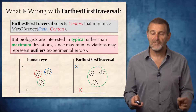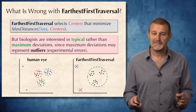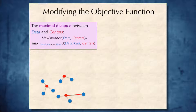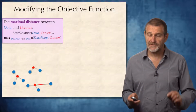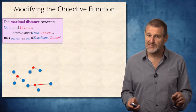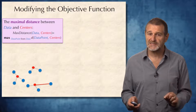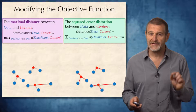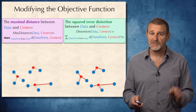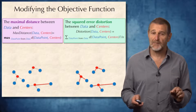We therefore need to develop a different approach to clustering that works well with outliers. To come up with a new clustering approach, we first need to modify the objective function. Our max-distance objective function, designed for the k-center clustering problem, has its limitation: only one of the distances contributes to the max-distance. Instead, we will use a new objective function called the squared error distortion.